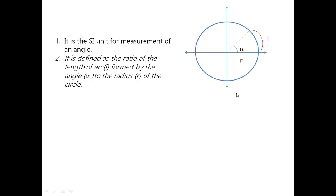So in this case α can be written as L by r radian because it is the ratio of the length of the arc formed by this angle α to the radius of the circle. Thus we can write α equals L by r radian. So this is the concept of radian.